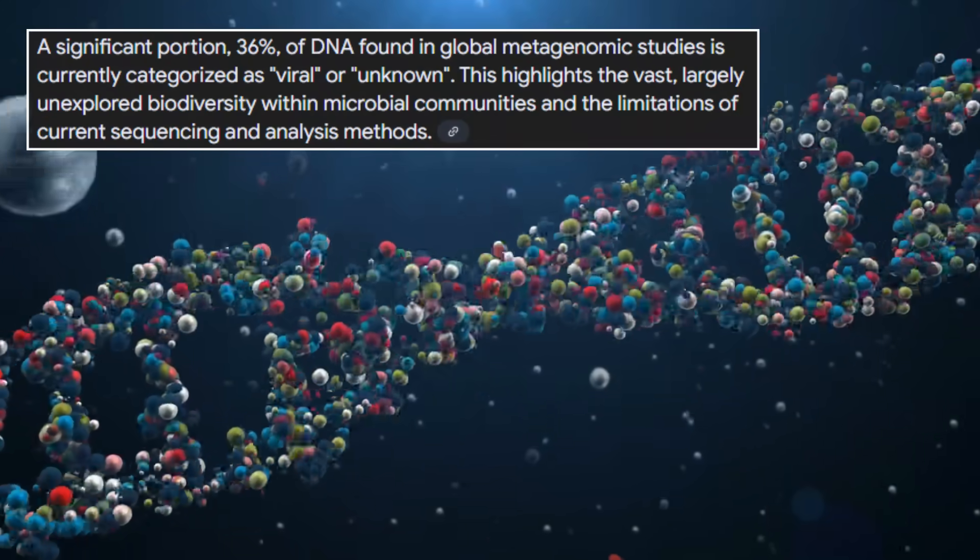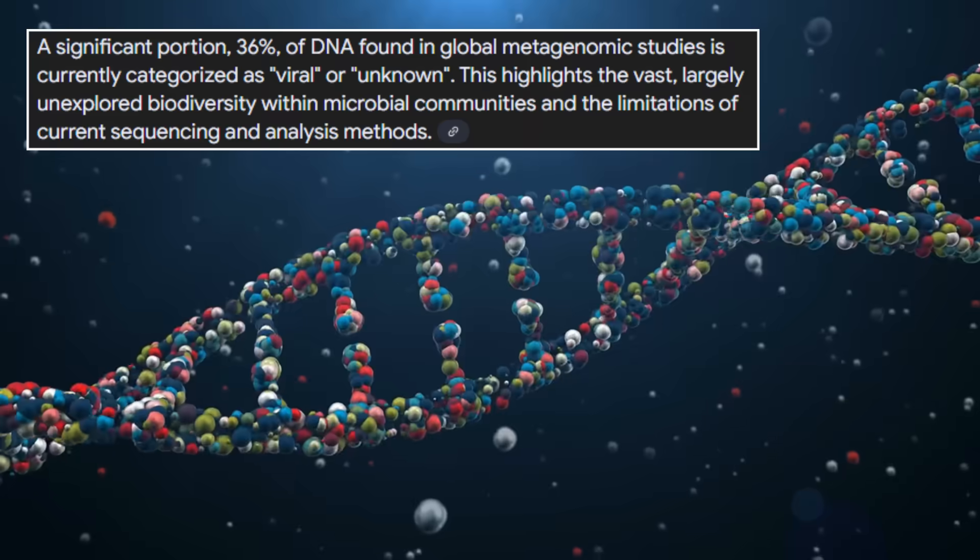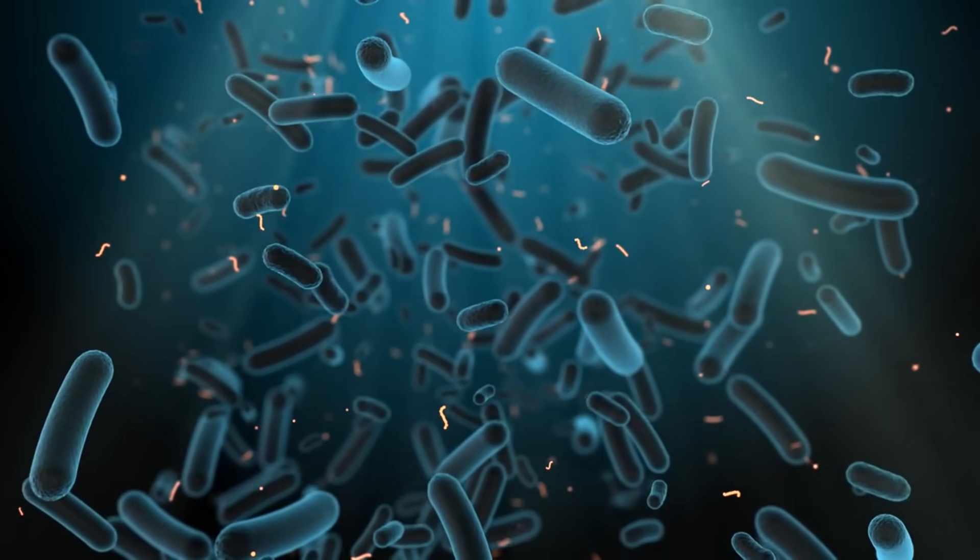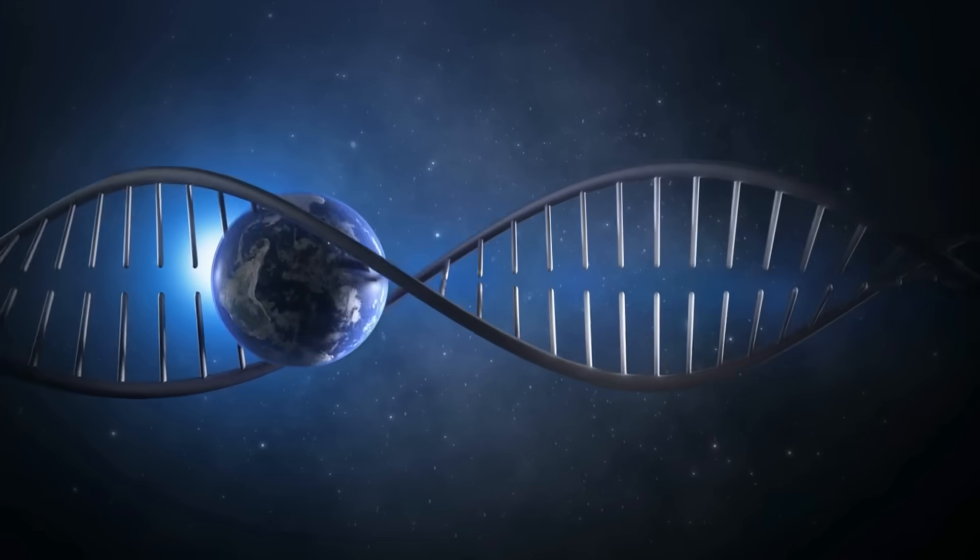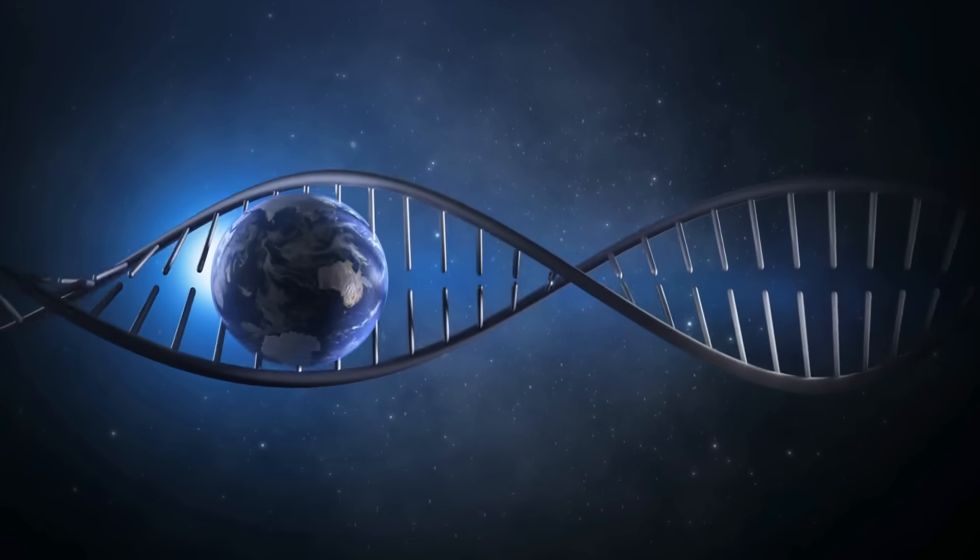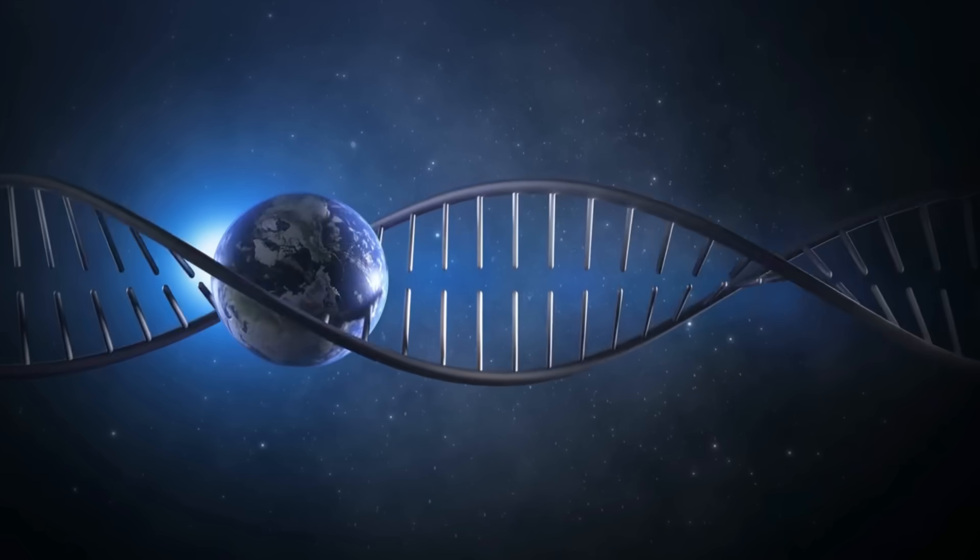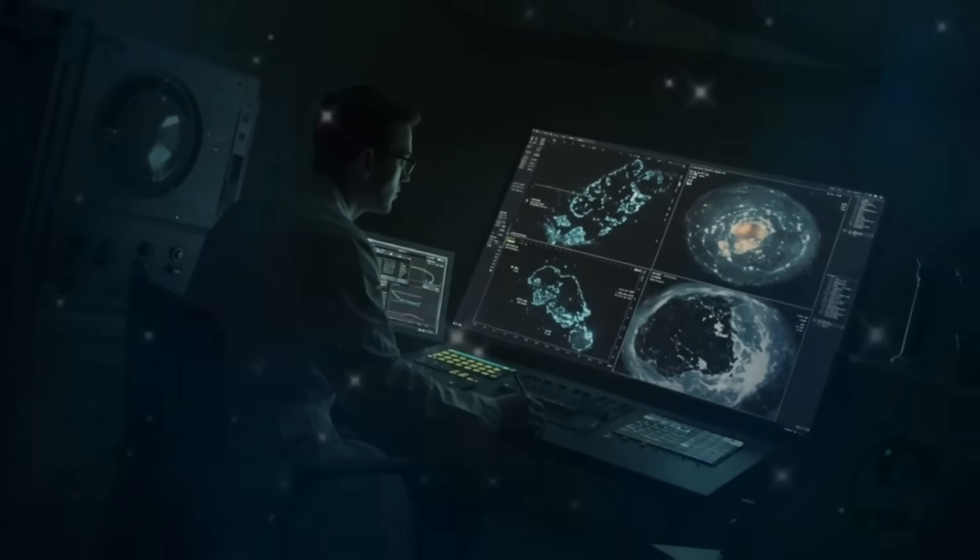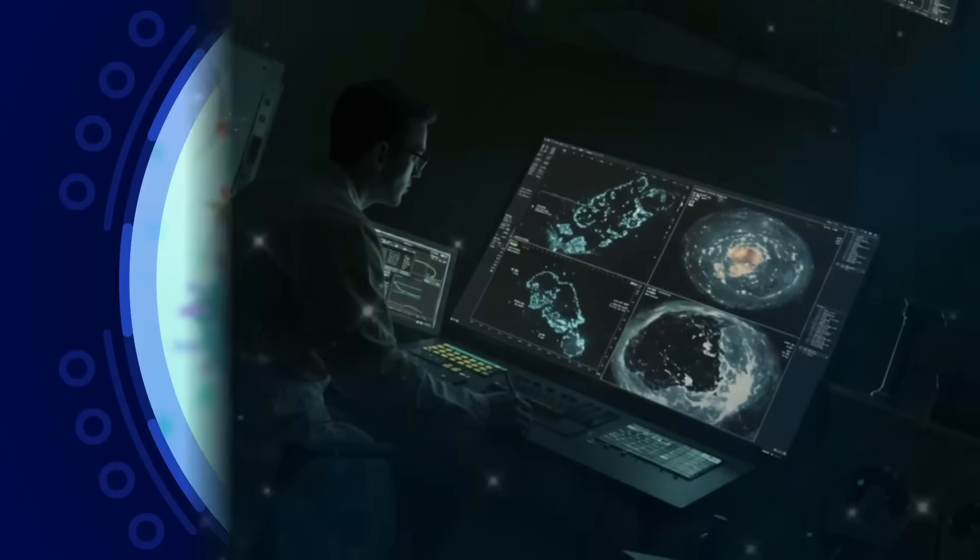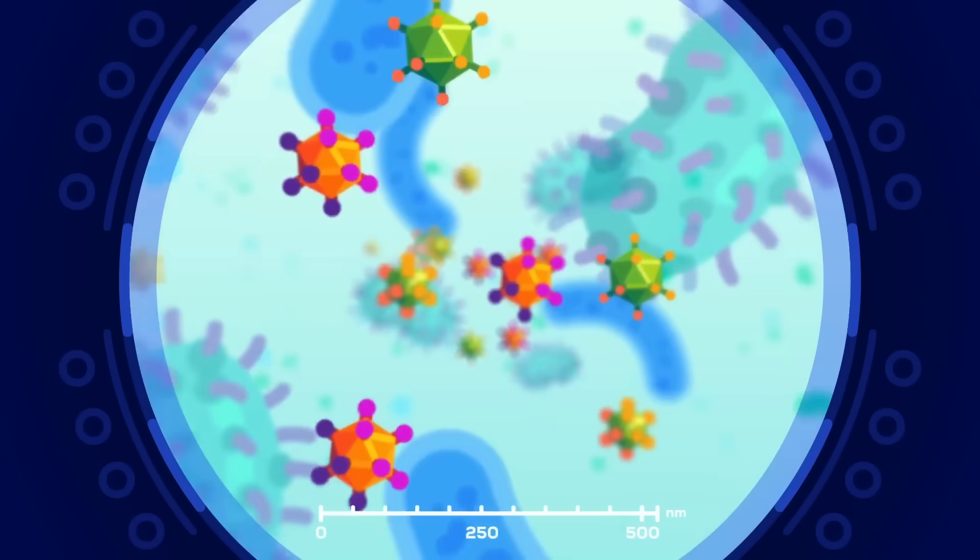A massive 36% of DNA found in global metagenomic studies can't be traced to any known organism. Think about that. More than a third of Earth's genetic diversity remains completely unclassified. It's as if we've been studying life through a keyhole, missing entire kingdoms of biology.